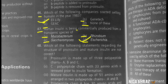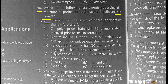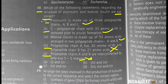Regarding the structure of proinsulin and mature insulin: proinsulin is made up of three polypeptide chains A, B, and C — correct. C polypeptide chain with 33 amino acids is removed prior to insulin formation — correct. Mature insulin is made up of 51 amino acids in two chains A and B — correct. Polypeptide chain A has 30 amino acids and chain B has 21 — incorrect. Chains A and B are interconnected by only one sulfur-sulfur linkage — incorrect. Statements four and five are incorrect, so option C is the correct choice.